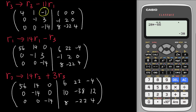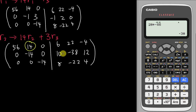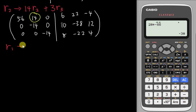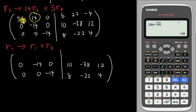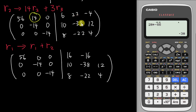The last number I want to make zero is the 14 in row one. New R1 = R1 + R2. Copying rows two and three: 0, negative 14, 0, 0, 0, 0, negative 14; 10, negative 38, 12; 8, negative 22, 4. Adding rows one and two: 56 remains, zero, zero — all the zeros align. Then 0 + 16 = 16, 0 + (negative 16) = negative 16, 0 + 8 = 8.